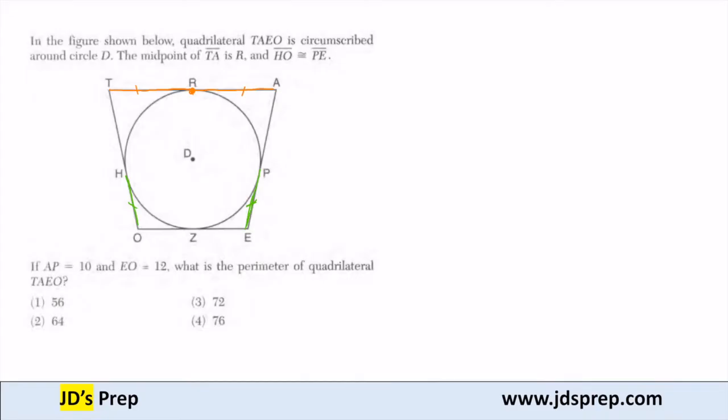Now let's look at the other piece of information that are given. AP is measure 10. So this length here is 10. And EO, which is this whole bottom piece here, is 12. We want to find the perimeter. So the first thing to note is, let's start at the top here. AP is 10.